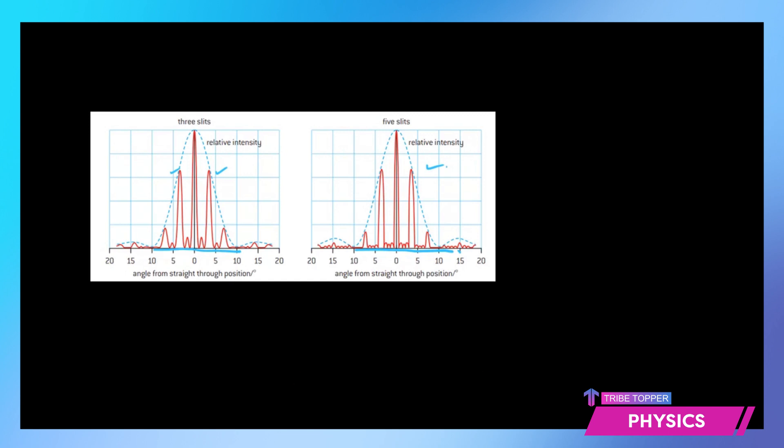And as we say that the intensity is proportional to the square of the number of slits. So for 2, 3 and 5 slits, if you see the intensity, the relative intensity is in the ratio of 4 is to 9 is to 25. So for 1 slit, I would say 1 here. So 1 is to 4 is to 9 is to 25 corresponding to 1 slit, 2 slit, 3 slits and 5 slits. This is the ratio of the relative intensities as the number of slits goes on increasing.